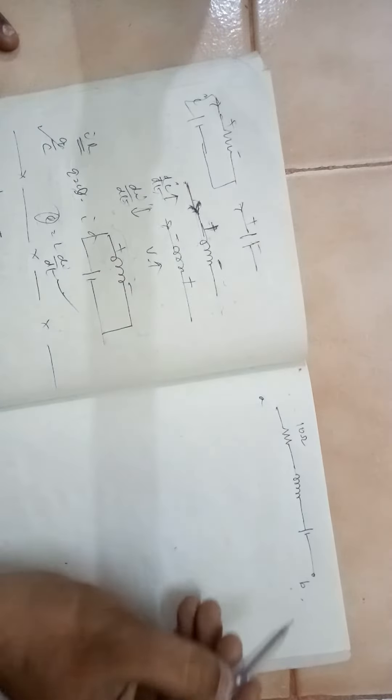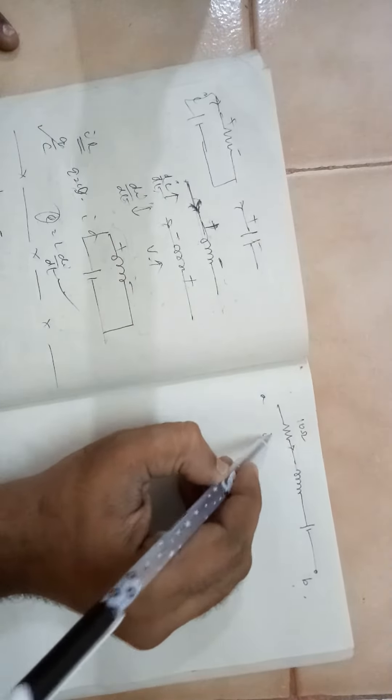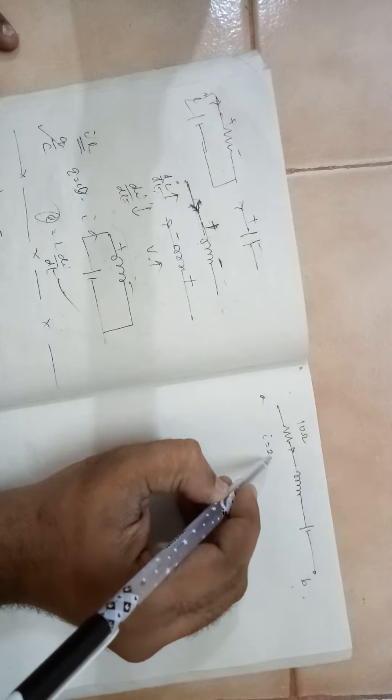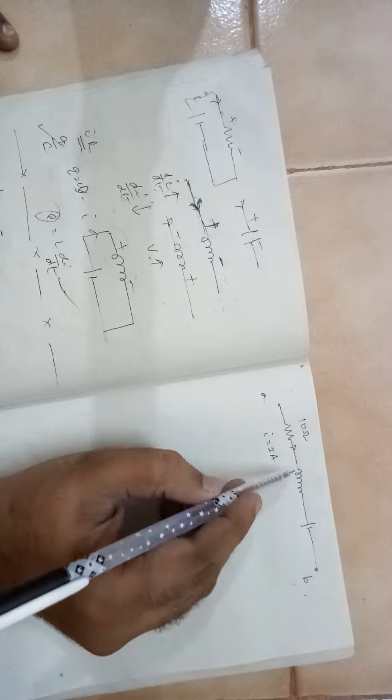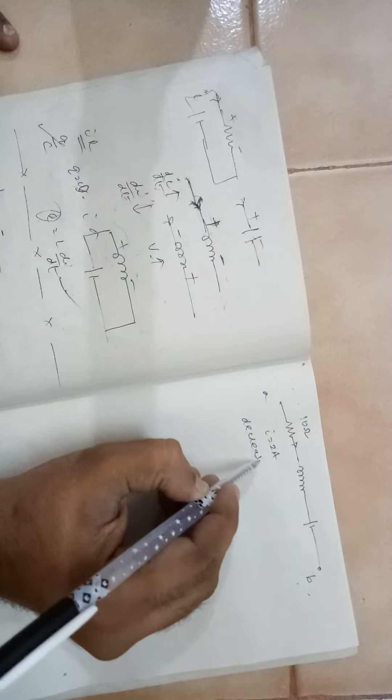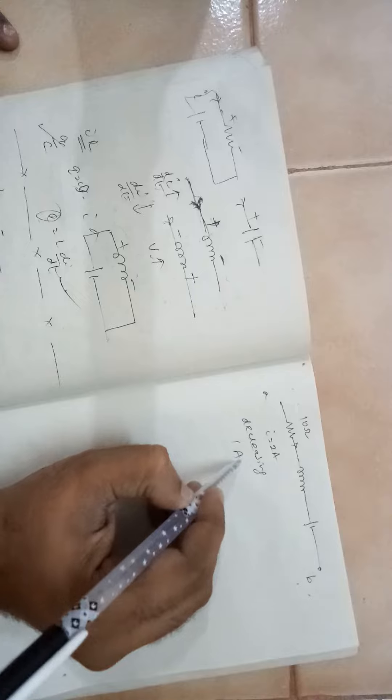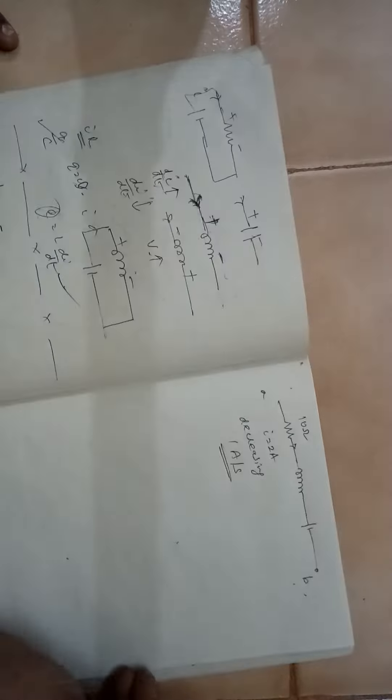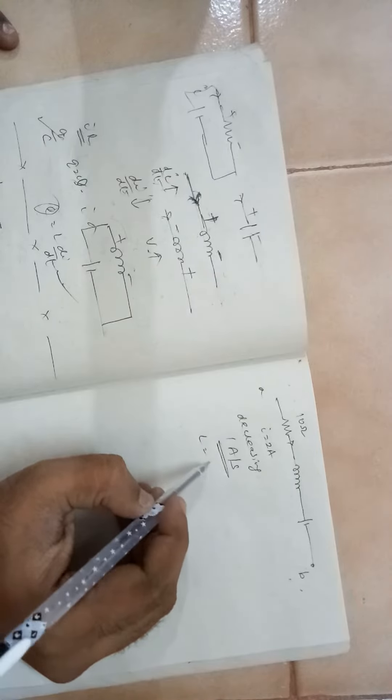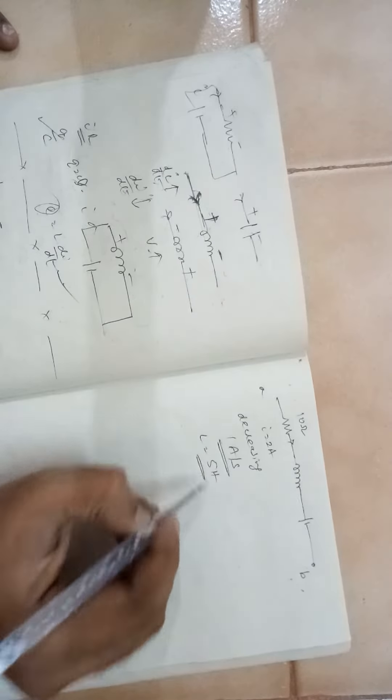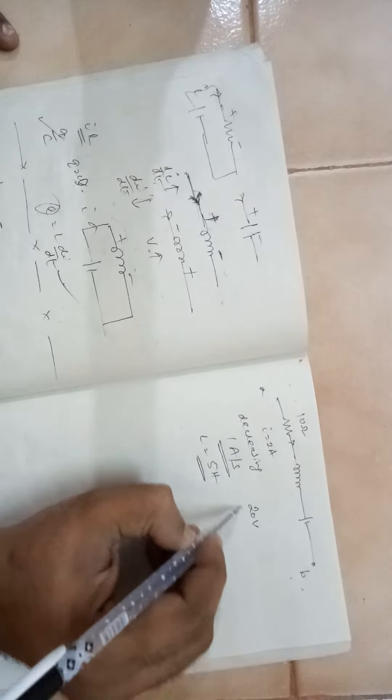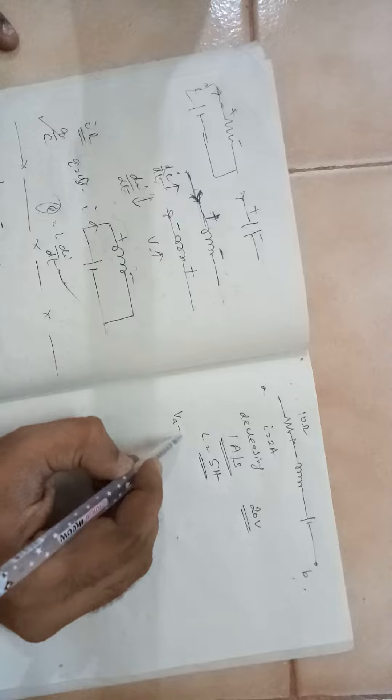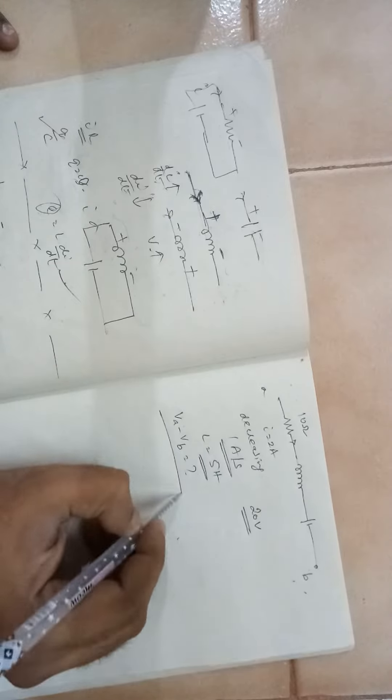The resistance is 10 ohms. Current that is passing is 2 amperes. The rate of change of current in this direction is decreasing and it is 1 ampere per second. The inductor has got 5 henries and this battery is 20 volts. You are supposed to find out VA minus VB is equal to how much.